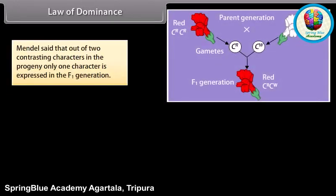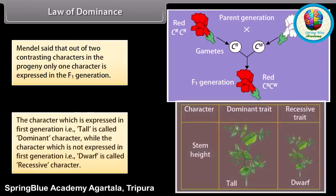Law of dominance. Mendel said that out of two contrasting characters in the progeny, only one character is expressed in the F1 generation. The character which is expressed in F1 generation — that is tall — is called the dominant character, while the character which is not expressed in F1 generation — that is dwarf — is called the recessive character.